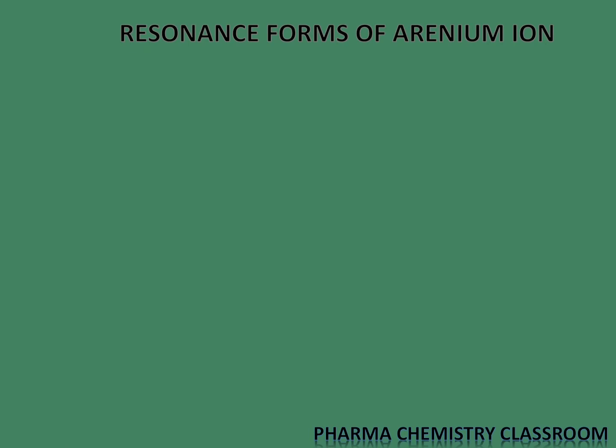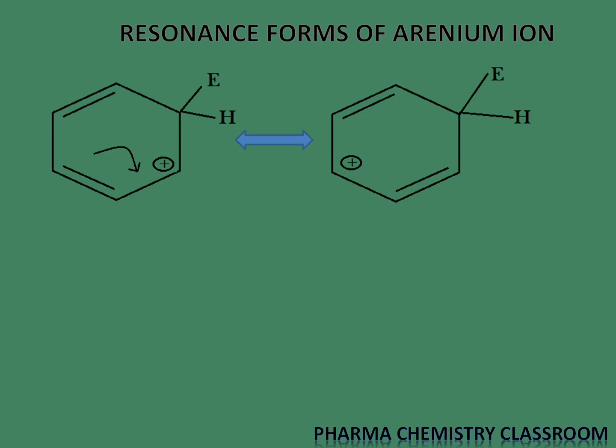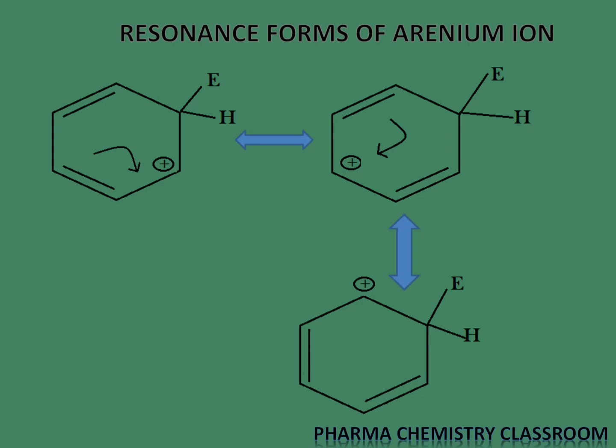The arenium ion is resonance stabilized. You can see the resonance structures of the arenium ion, and how the pi electrons are transferred to get stabilized structures. It is a partial resonance structure because the sp3 hybridized carbon is not involved in this resonance.